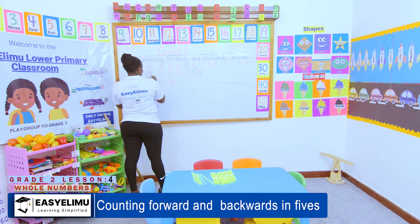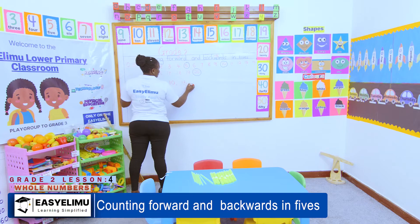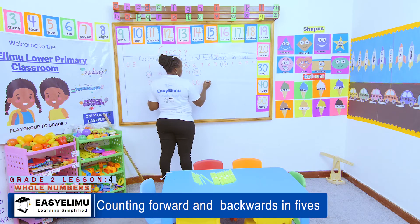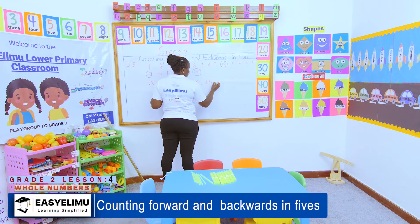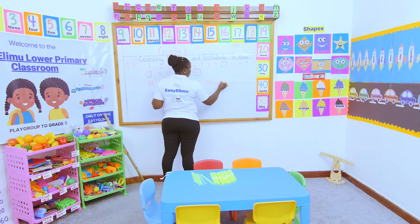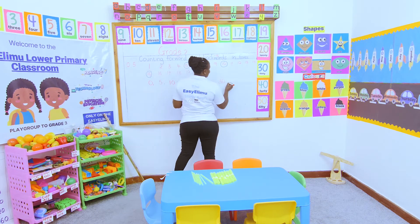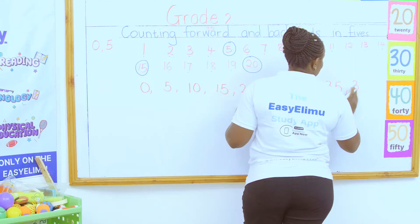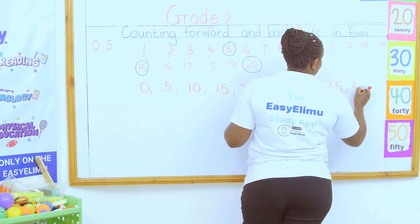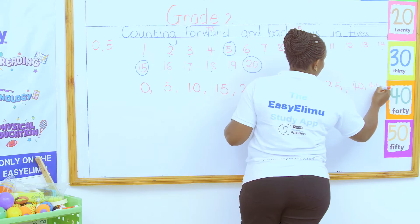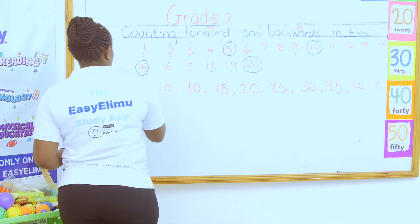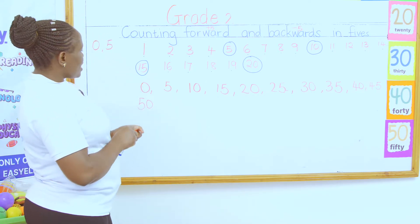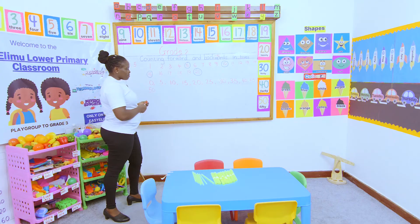Then the next number must have a zero — which number is that? 30. Then the next number must have a five — which number is that? 35. Then the next number must have a zero — that is 40. Then 45. And lastly, 50.